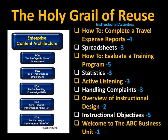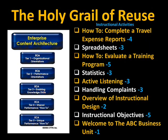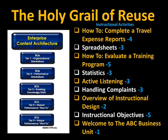Handling complaints is something that many jobs in an enterprise might have to do — ask every manager if they have to handle complaints, not just the people at the complaint window. That content would be in tier three. Active listening and handling complaints are enabling content that would allow somebody to do the terminal performance of their job. Writing instructional objectives is unique to instructional designers and therefore would be part of a tier five set of how-to content. Welcome to the ABC business unit is a tier one organizational orientation.